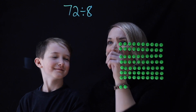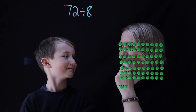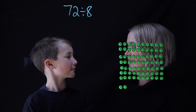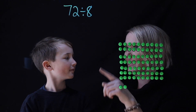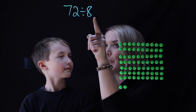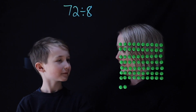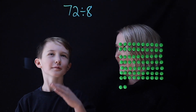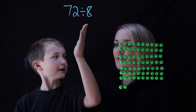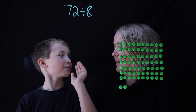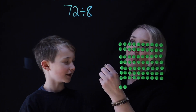Hi everyone, today we're doing 72 divided by 8 and Louie's got a really cool way when it's divided by 8. What do you do? We basically just split it and split it and split it. So you divide it by 2 three times.